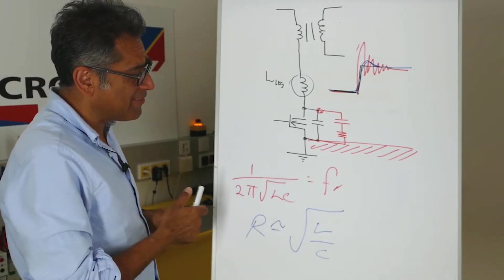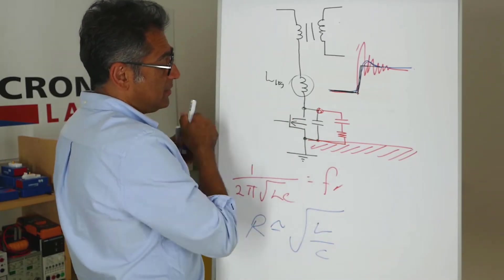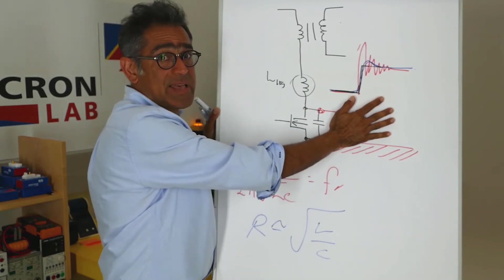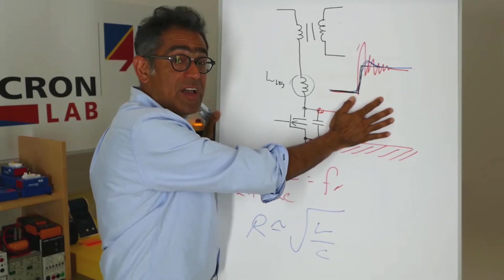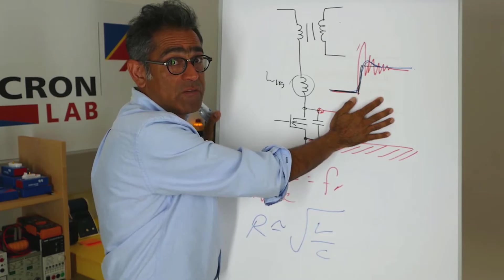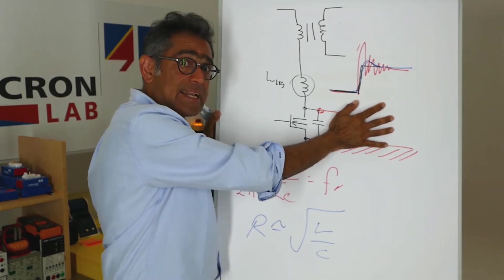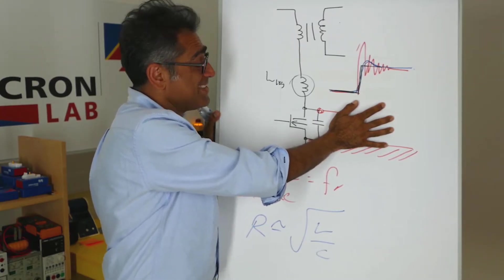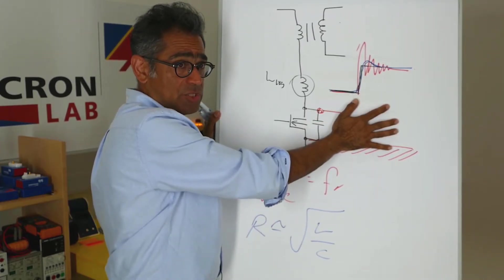The problem we have is that C is unknown. First of all, this is the C that is causing the ringing, so it's the parasitic capacitance of the MOSFET. Although it is specified in the datasheet, you'll find that it is proportional to the square of the voltage. So, unless you just magically happen to be using exactly the same voltage that the manufacturer tested it on, we've got a problem. We don't know what this value is and it changes with the voltage.